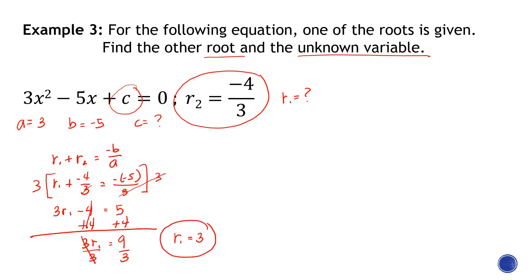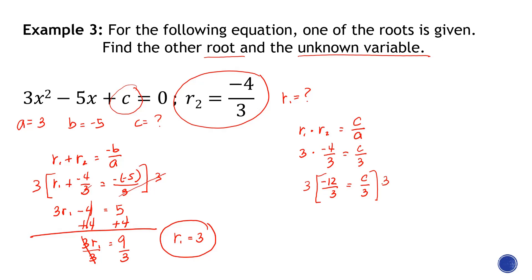Now let's solve for the value of c using the product formula. r1 is 3 and r2 is −4/3, with a = 3. Multiplying 3 and −4/3 gives −12/3 = c/3. Multiplying both sides by 3, we get negative 12 equals c. So c = −12.